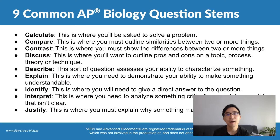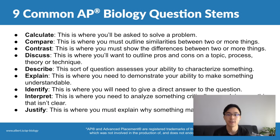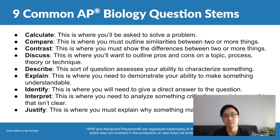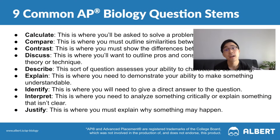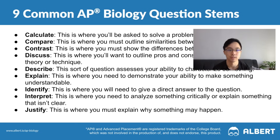The first directive word is calculate, which means you're going to be asked to solve a problem. The second is compare — you're going to go over the similarities of two or more things. The third is contrast, the opposite of compare, where you show the differences between two or more things. Next is discuss, where you outline the pros and cons of a topic, process, theory, or technique. Then we have describe, where you characterize something, and explain, where you demonstrate your ability to make something understandable. Identify means to give a direct answer. Interpret means to analyze something critically or explain something that isn't clear. And finally, justify means to explain why something may happen. Stems like calculate, explain, and justify are usually associated with two-point problems on AP Bio.